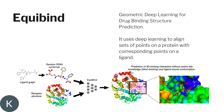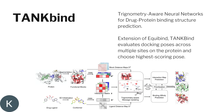The first one is UQBIND, which is a geometric deep learning based method. It uses deep learning to align a set of points of a protein with the corresponding points of the ligand. As you can see in the figure, it first uses the RDKit conformer, which generates structures based on RDKit and the receptor, and then UQBIND tries to map it with the predicted binding site.